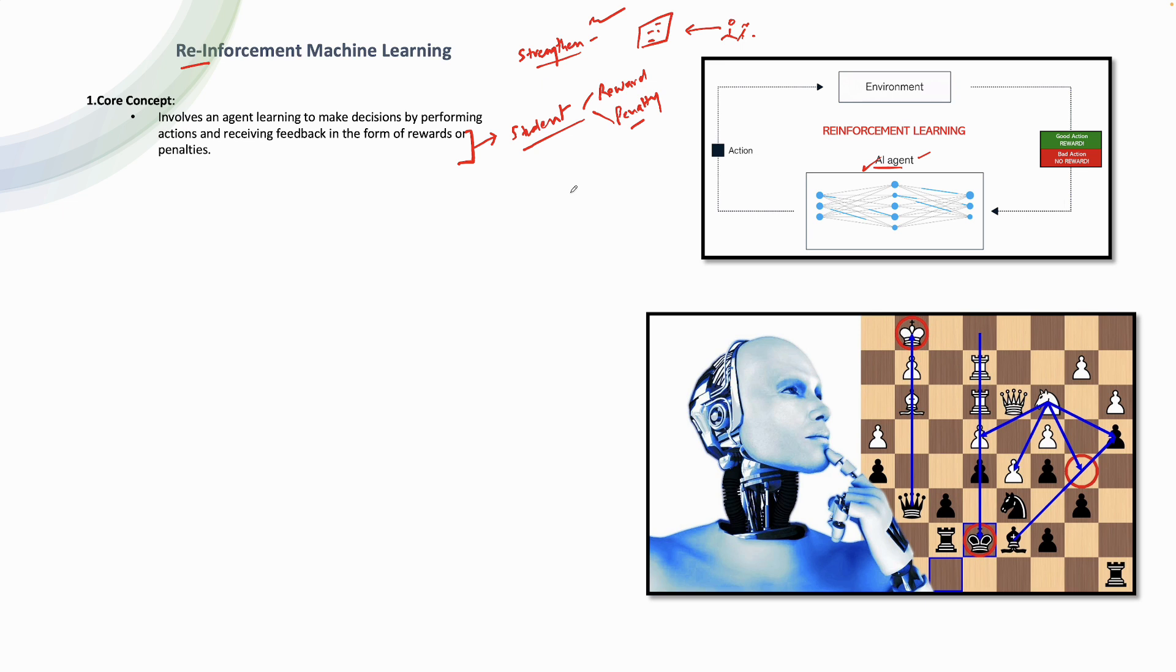What is the aim? The aim is to improve you as an individual, as a student, because the teacher wants you to be a bright student. If you do something good, you get a reward. If you do something bad, you get a penalty. Same way, the concept of reinforcement machine learning says that it is done where you need to perform the actions and you receive the feedback in the form of reward or penalty.